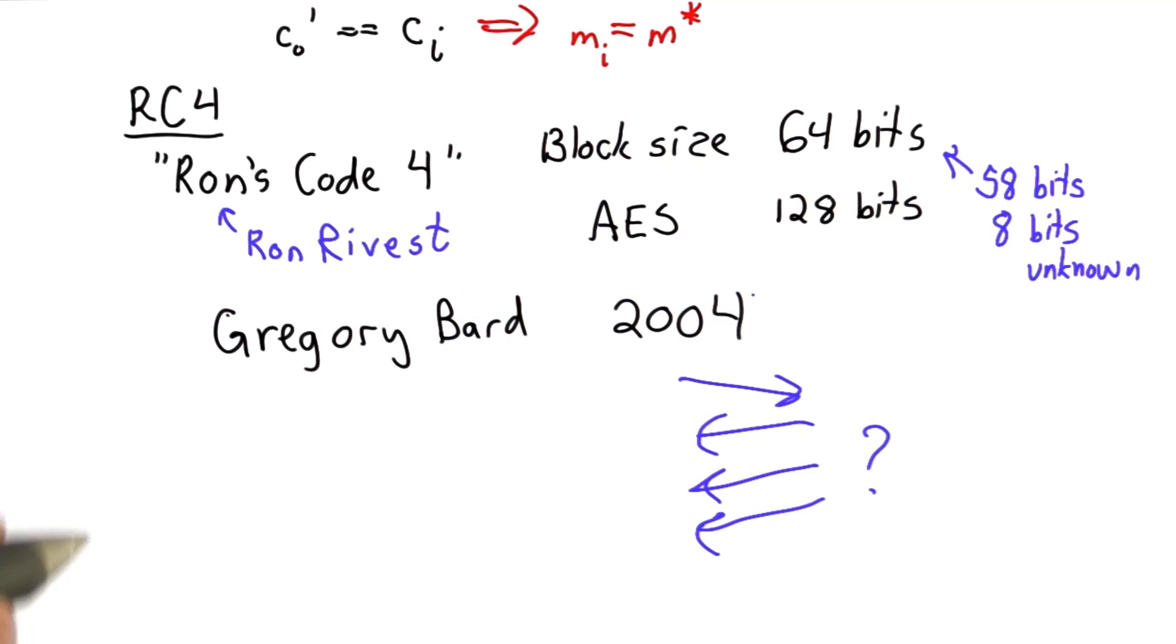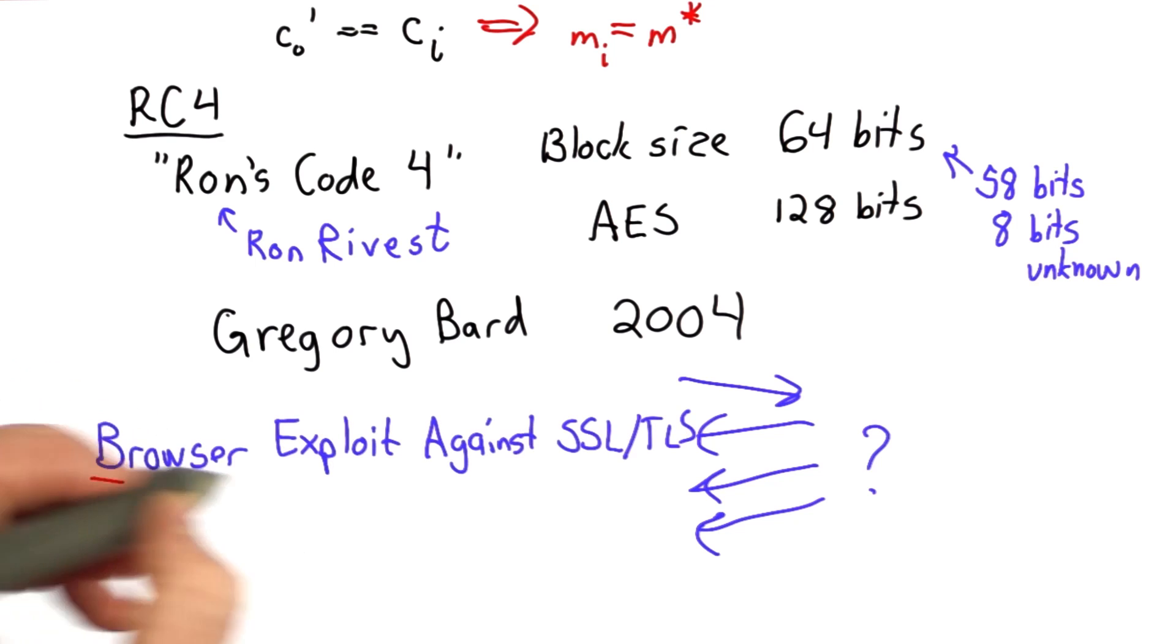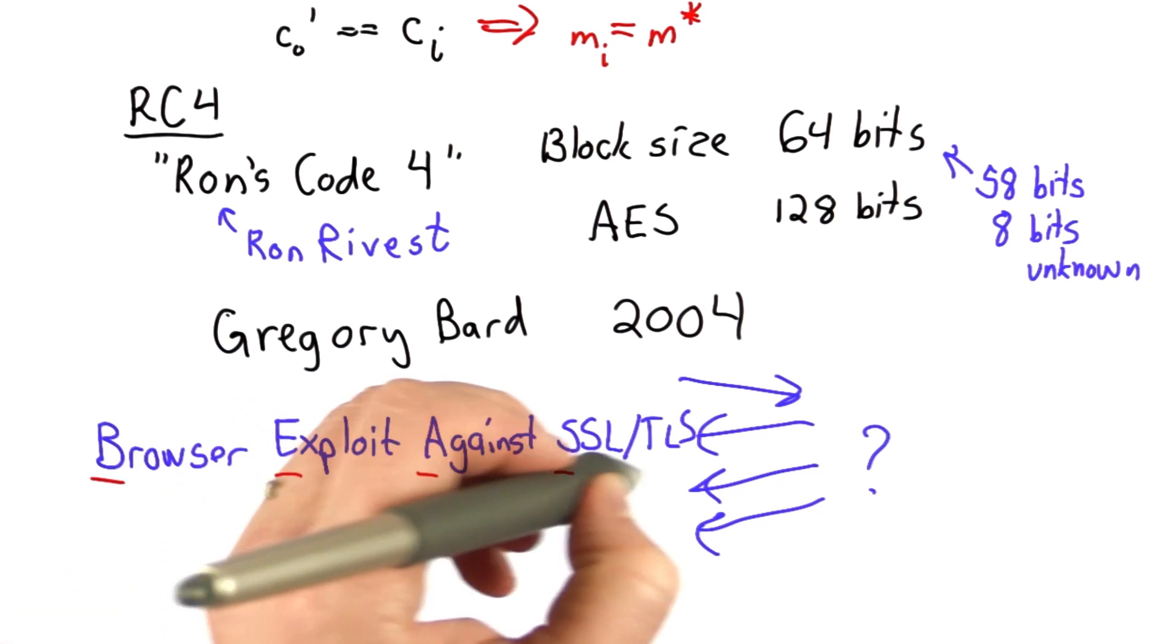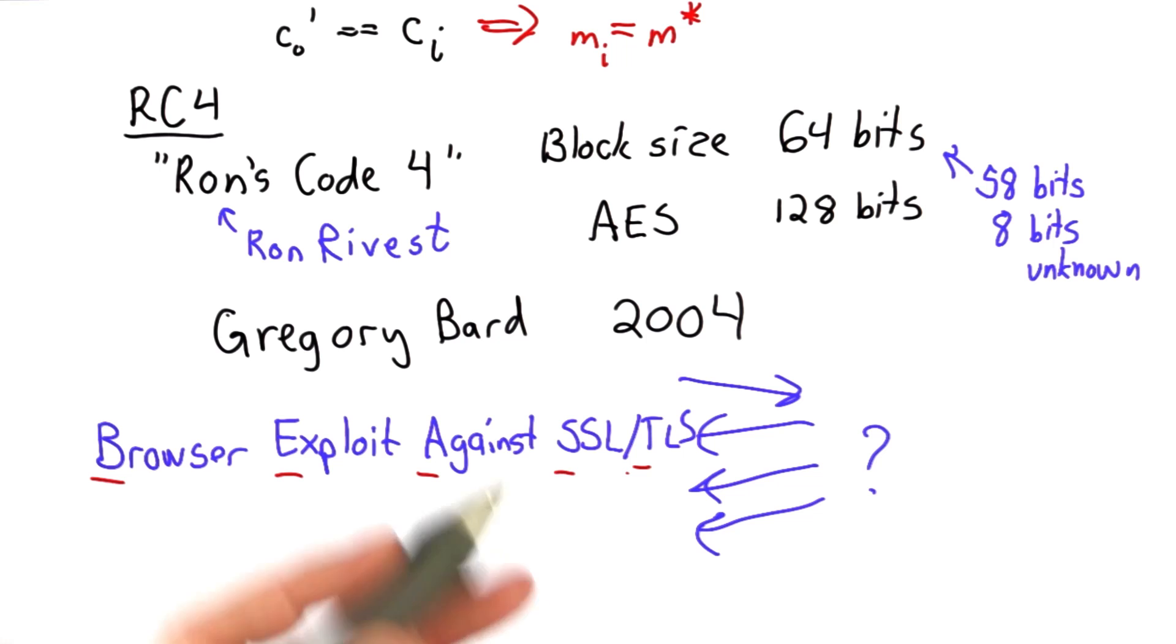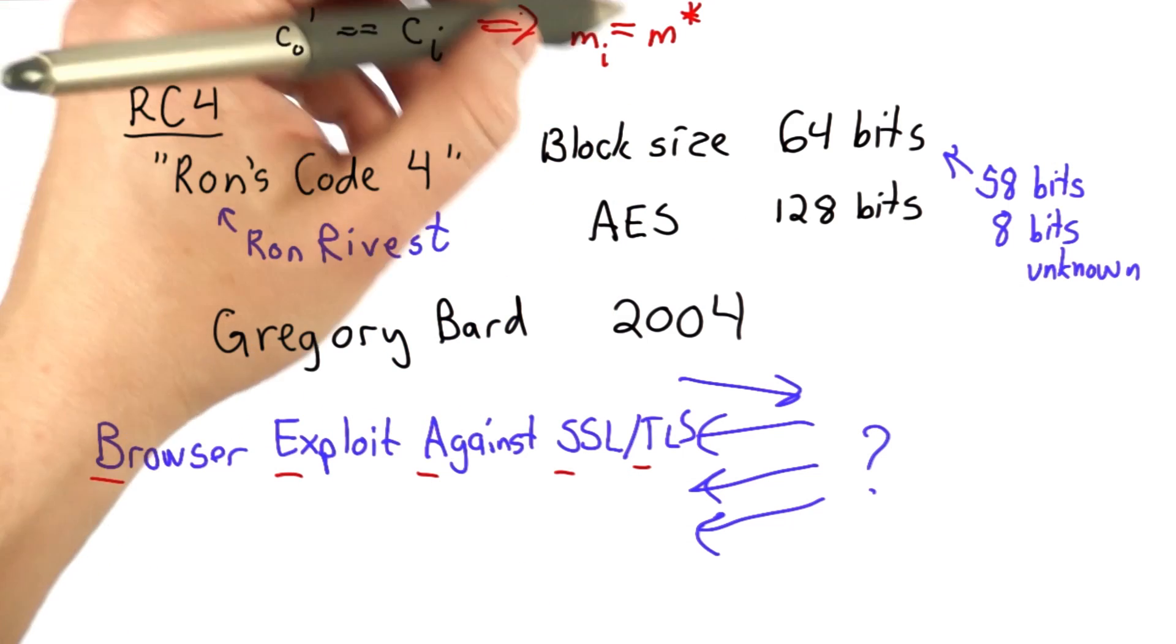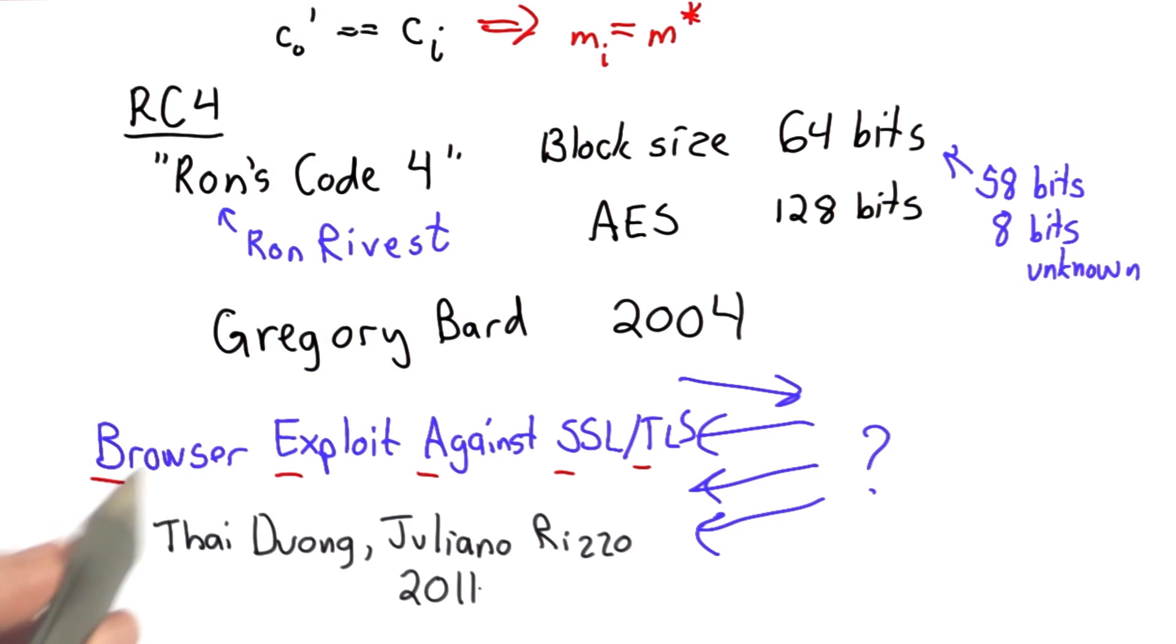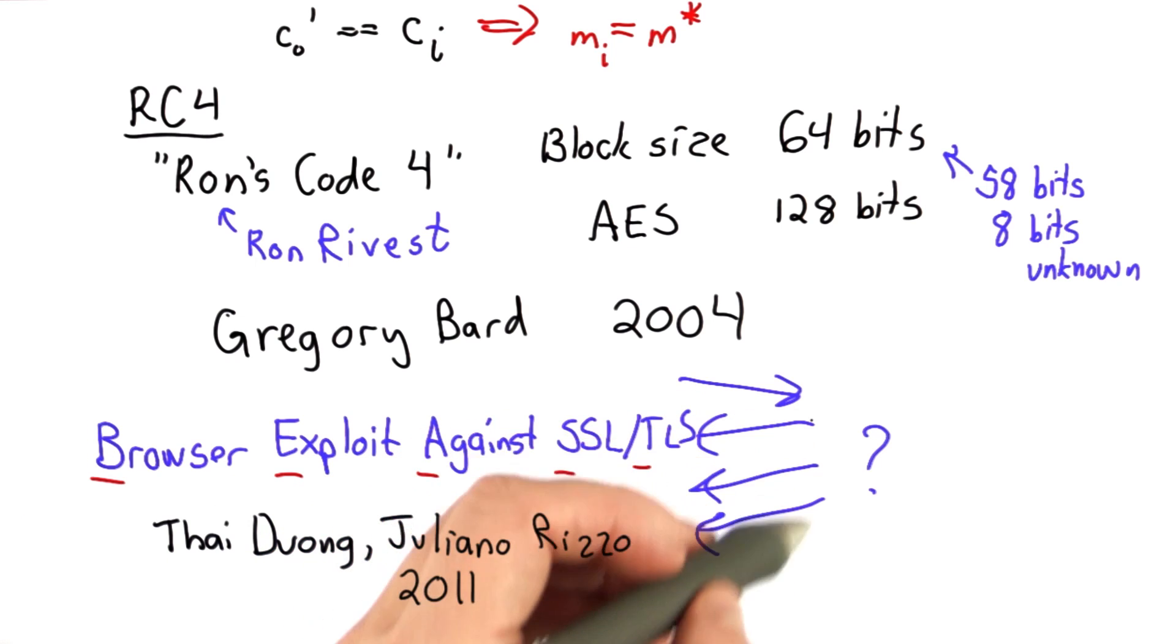And it turns out that there is an attack that exploits this. It has the rather clever acronym BEAST, Browser Exploit Against SSL TLS. And this found ways to use this cryptographic weakness, and it turns out if you can inject JavaScript into the page, you can control these requests enough to actually use this.